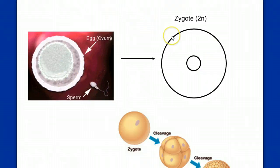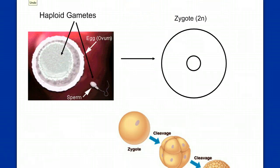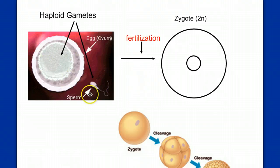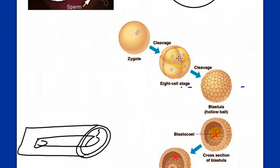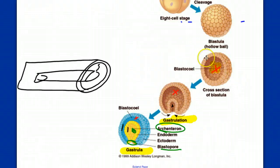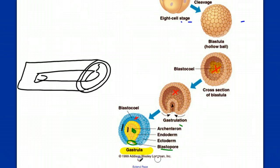Two haploid gametes combine to form one diploid zygote. To get there, we need to understand the fertilization event — how these two gametes fuse to form the first cell of the new organism. From the zygote, we'll go through cleavage, increasing cell number without increasing overall volume, then through invagination to form a gastrula, and we'll discuss the different germ layers that arise by that process.